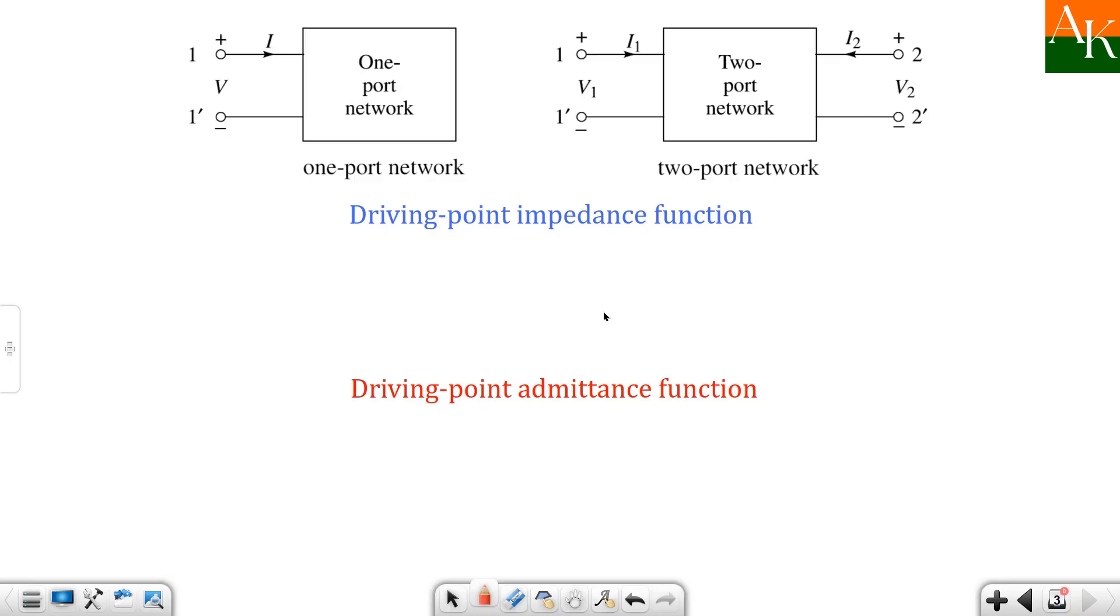Now for one port network, how is the driving point impedance function? For driving point you have to keep in mind the quantities whose ratio you are taking - they are defined at the same port.